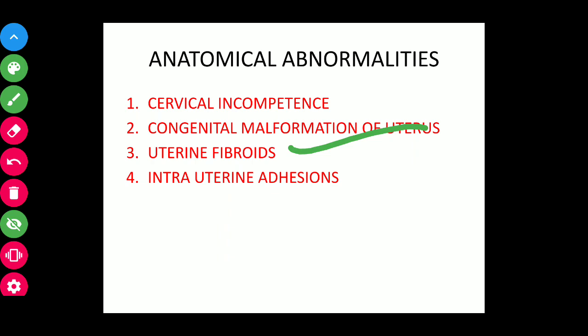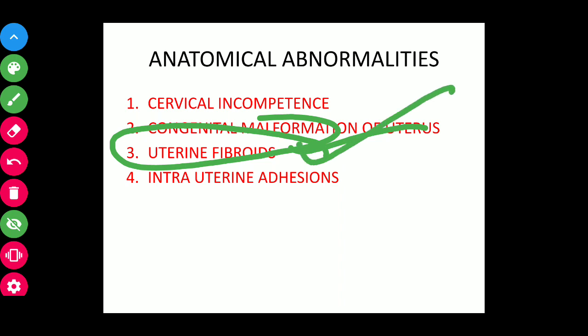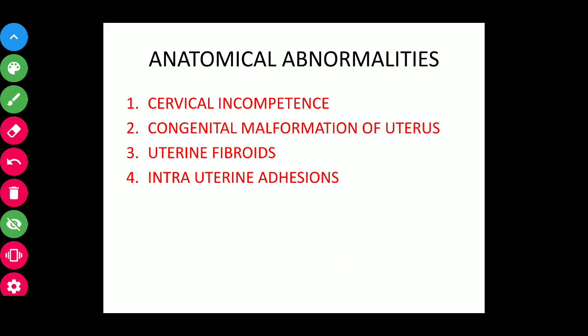Uterine fibroids, especially of the submucosal variety, may be responsible not only for infertility but also for abortions. This is due to distortion or partial obliteration of the uterine cavity, decreased vascularity at the implantation site, red degeneration of the fibroid, and increased uterine irritability.